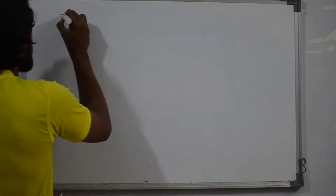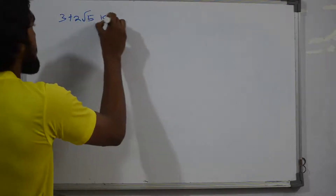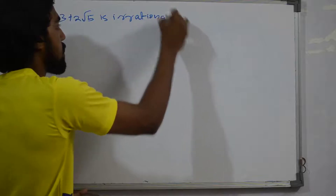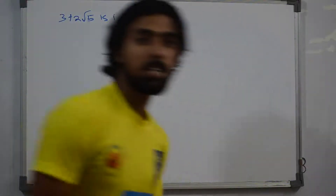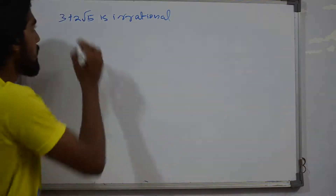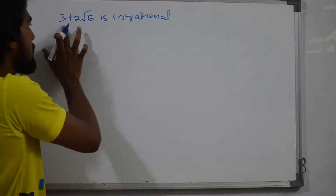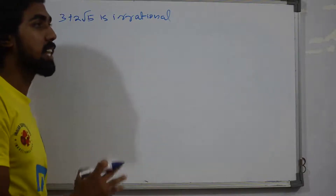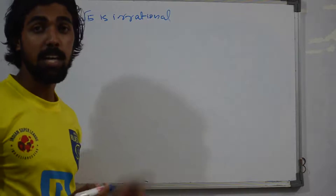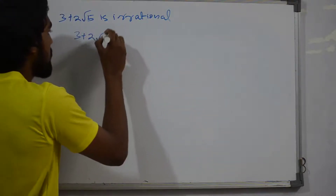How do we prove that 3 plus 2 root 5 is irrational? We will prove it is irrational. We are going to go to 3 plus 2 root 5. We are going to assume this and ask whether it is a rational number.